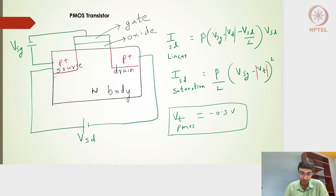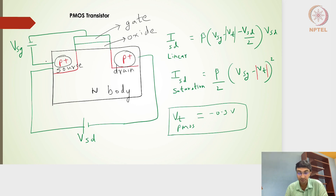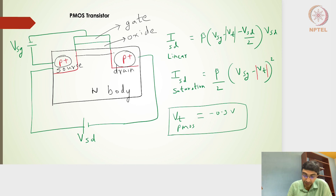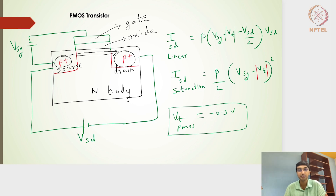When we see diffusion pockets being P-plus, it is a PMOS transistor; when we see N-plus in the pocket diffusions, we call it an NMOS transistor. The reason it is called a PMOS transistor is that we have P-plus diffusion pockets as source and drain. Once the inversion channel is formed, holes propagate from source to drain — the majority carriers come from the P-diffusion pockets.